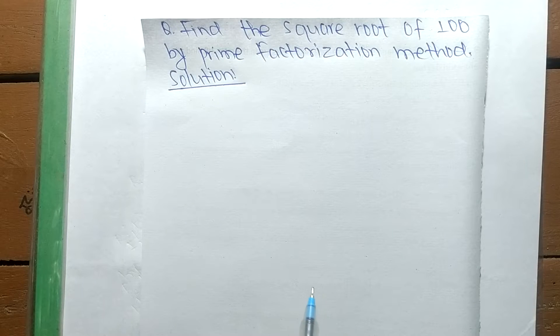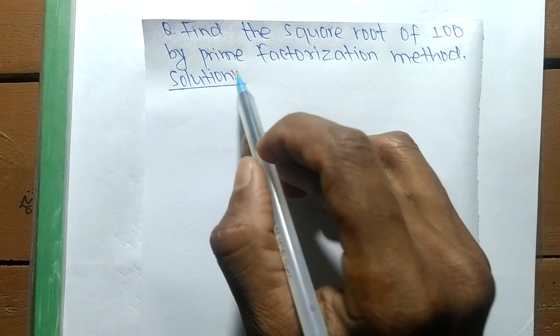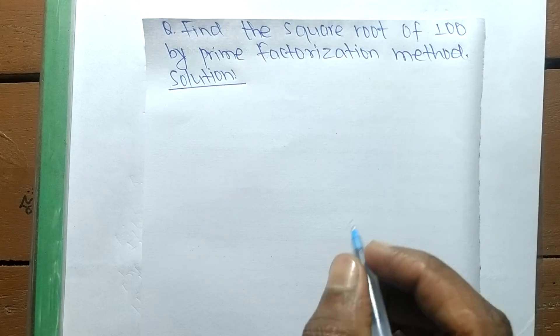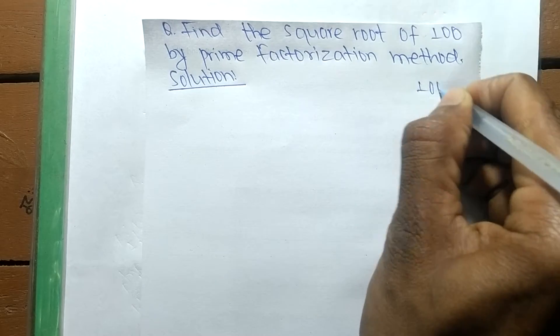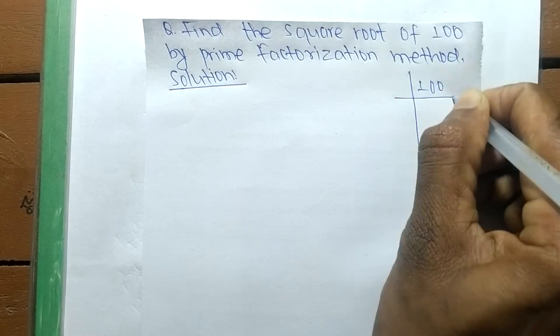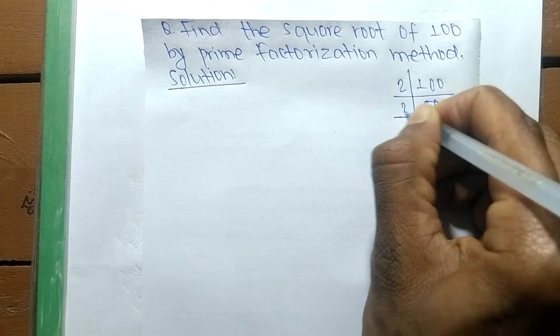Today in this video we shall learn to find the square root of 100 by prime factorization method. First, we find out the prime factors of 100. It is 2 times 50, means 100 equals 2 times 50.